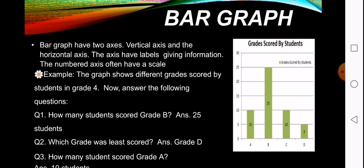In which grade was the least scored? Again see the graph. Answer is grade D. How many students scored A? Check again. That is 10. Correct.